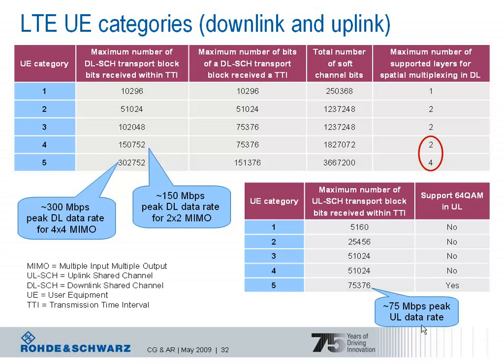One question about the UE categories: do we know which categories the wireless industry is working on — meaning which type of UEs we will see when LTE is commercially rolled out? For the downlink, four receive antennas at the terminal is very ambitious, so we won't see that in the near future. But having two antennas and supporting true MIMO spatial multiplexing is definitely coming, so UE category 4 in the downlink is likely. For the uplink, the highest category supporting 64QAM is quite ambitious, so we will see the other categories initially.